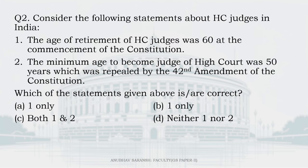Consider the following statements about High Court judges in India. Statement 1: the age of retirement of High Court judges was 60 at the commencement of the constitution. Statement 2: the minimum age to become a judge of a High Court was 50 years, which was repealed by the 42nd Amendment. We know the age of superannuation for Supreme Court judges is 65 years and for High Court judges is 62 years.